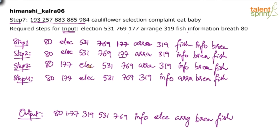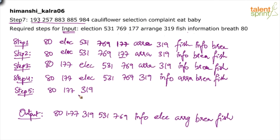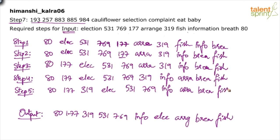In step five, fix the next number. 80 and 177 are already there; what comes after 177 is 319. Bring 319 to the third position and copy everything else: election, 531, 769, info, arrange. Continue this process — the pattern is clear.